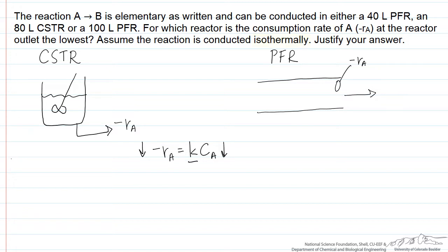The temperature is set because the reaction is conducted isothermally, so K is going to be fixed. Wherever we have the lowest concentration at the outlet, in other words the highest conversion, we'll expect to have the lowest rate.